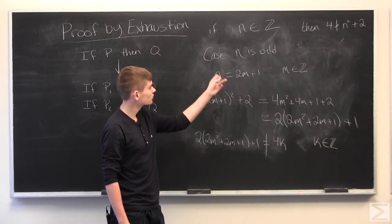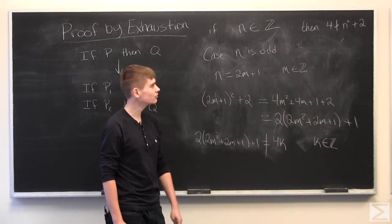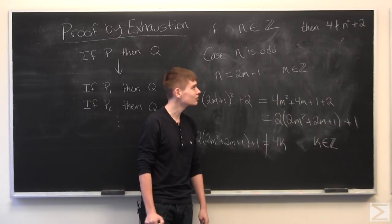And so, since all integers must either be even or odd, we have shown that for any integer N, 4 will not divide N squared plus 2.